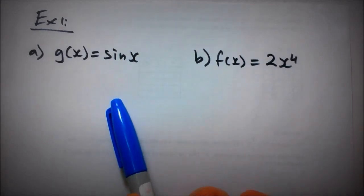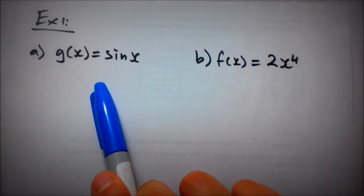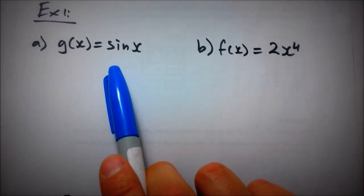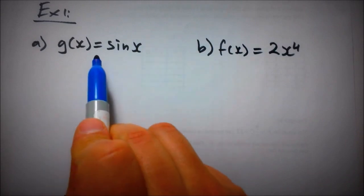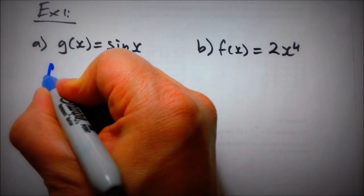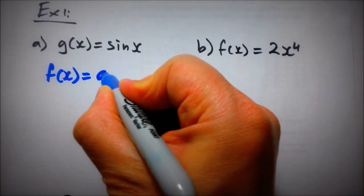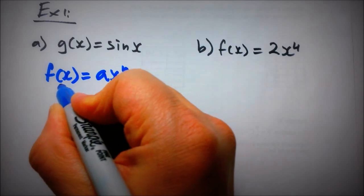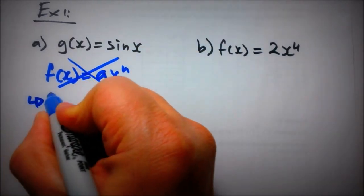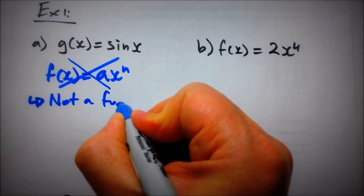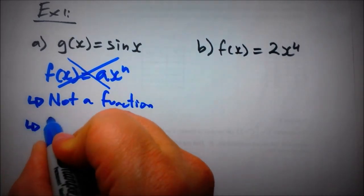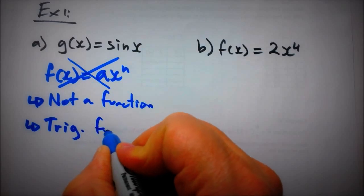So let's look at this first function. Is it a polynomial function, yes or no? You may want to pause the video now and maybe try to figure it out by yourselves. But we can say that this function is not a polynomial function - it's not in the form that we mentioned before, f(x) equals ax to the n. So simply cross it out. We can say it's not a function - not a polynomial function. This is in fact a trigonometric function.